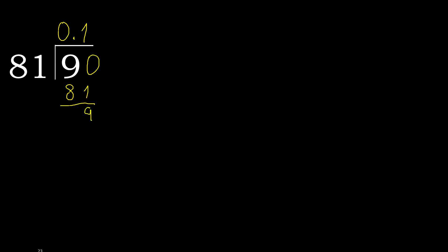The next digit has no number, therefore complete with 0. Always complete with 0 after the point. 0 point, 90.